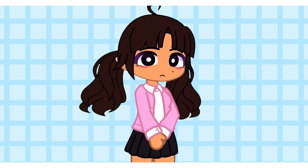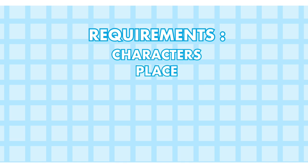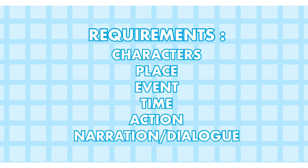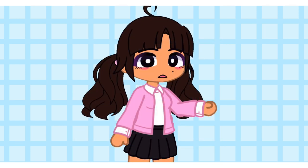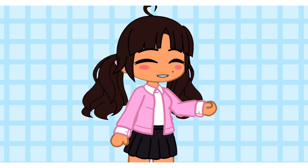What goes into a cinematic scene? A cinematic scene consists of characters, a place, an event, time, action, narration/dialogue, and perspective. These seven are extremely important when creating a scene. If you don't have these seven, then your scene may not be at its fullest potential. I'll create a scene as I explain each.